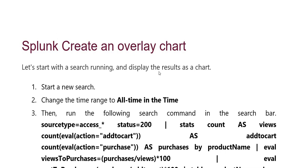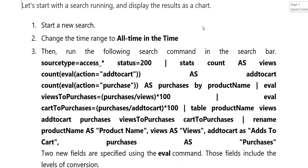Let's start with the search running and display the result as a chart. First, yahan pe start kia gaya new chart. Second, change karein time range to all time. Third, run karein the following search command.